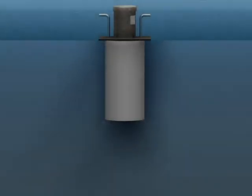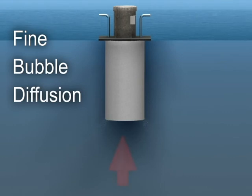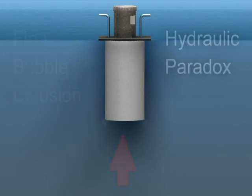This new fine bubble diffusion system pulls wastewater up from the bottom and then, using a physics principle called the hydraulic paradox, it shatters the surface tension of the water. This creates an imbalance in pressure, which pulls air into the water like a vacuum.